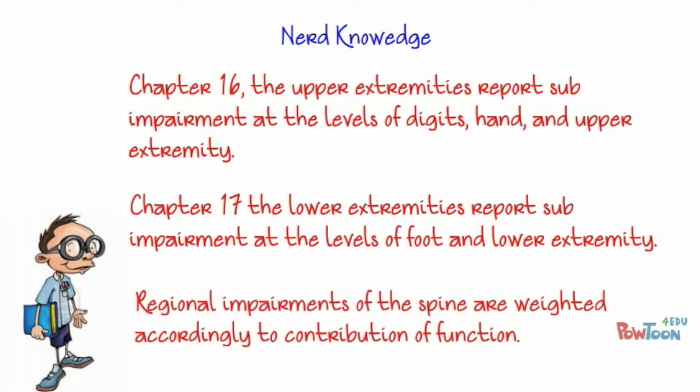Regional impairments of the spine are weighted accordingly to the contribution of function. This explains why the cervical spine has the highest impairment value in the DRE categories at 38%, while the thoracic and lumbar spine have similar ranges of 25% to 28% in the Category 5 DRE.